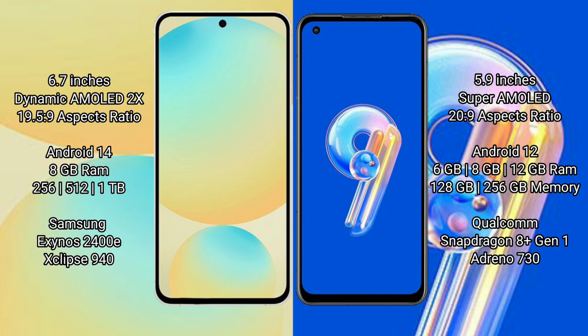The Samsung Galaxy S24 FE runs on the Android 14 operating system, while the Asus Zenfone 9 runs on Android 12. The Samsung Galaxy S24 FE comes with 8GB RAM and 128GB, 256GB, or 512GB internal storage options, powered by the Samsung Exynos 2400E processor with a GPU score of 940.